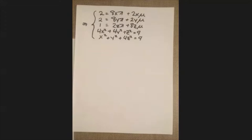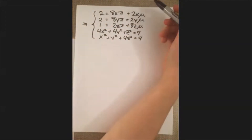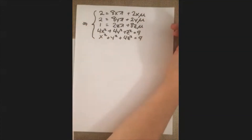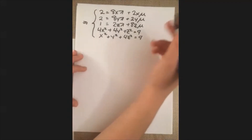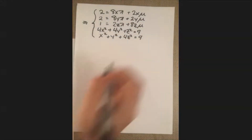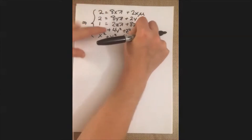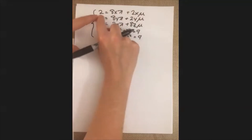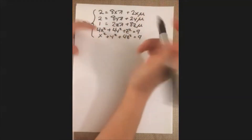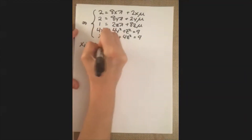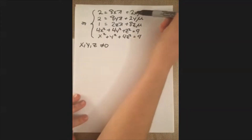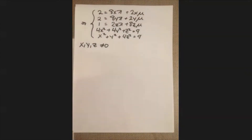The first thing you want to do when solving these systems is make sure you're not going to accidentally divide by zero. We notice pretty quickly that neither x, y, nor z can be zero — because if x were zero, for example, we'd have 2 = 0, which doesn't make sense. Similarly for y and z. As for lambda and mu, we won't be dividing by them with the method we'll use, so we don't need to worry about those.